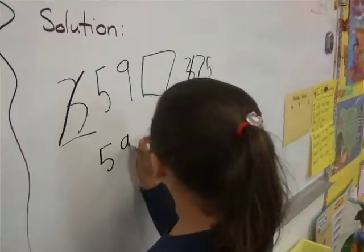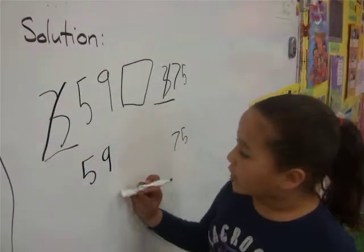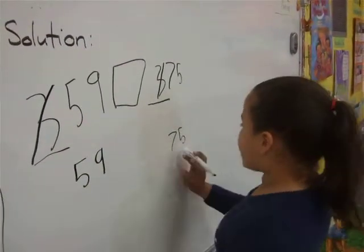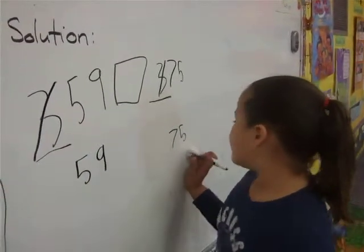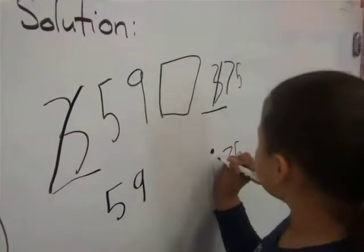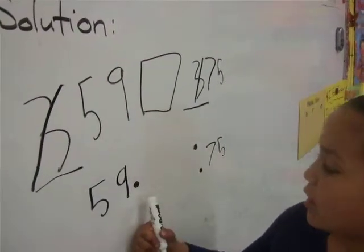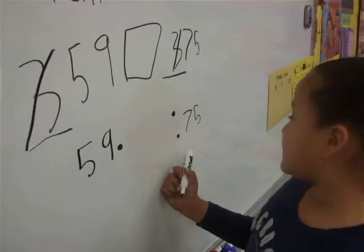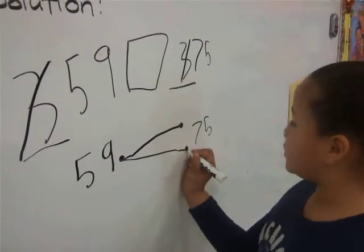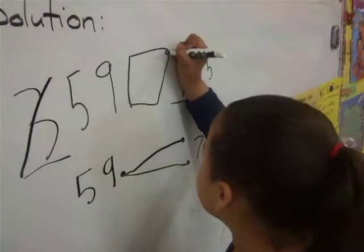5, 9, 75. Which is the greater number? 59 blank or 75. 75 is the greater, so we put two dots and one dot. One dot is less than two dots. Now we connect the dots and put the dots away.